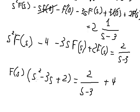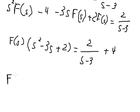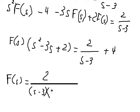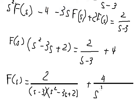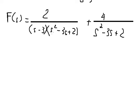Next we divide both sides by this expression. We can do factorization, giving us (h minus 1) and (h minus 2).